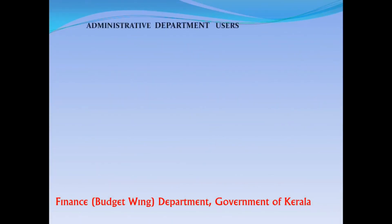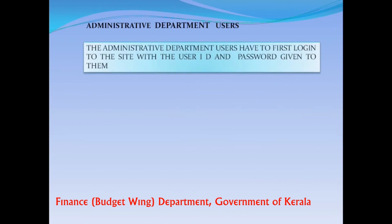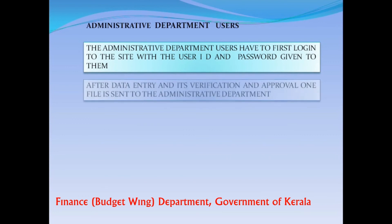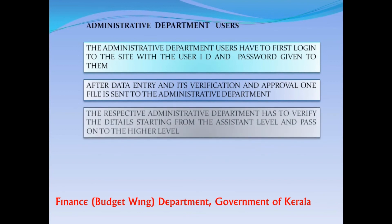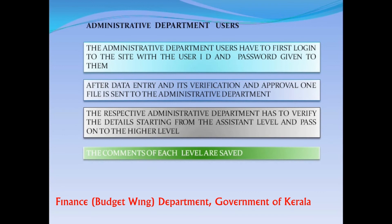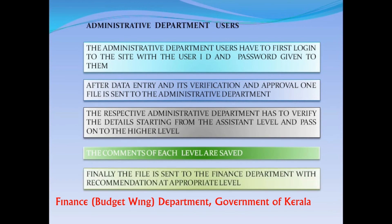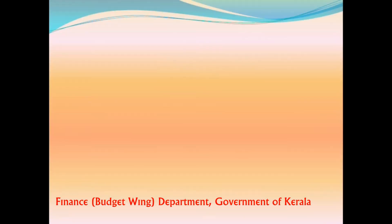Administrative Department Users have to first log in to the site with the user ID and password given to them. After data entry, verification, and approval, the file is sent to the Administrative Department. The respective Administrative Department has to verify the details starting from the Assistant level and pass on to the higher level. The comments of each level are saved. Finally, the file is sent to the Finance Department with a recommendation at the appropriate level.